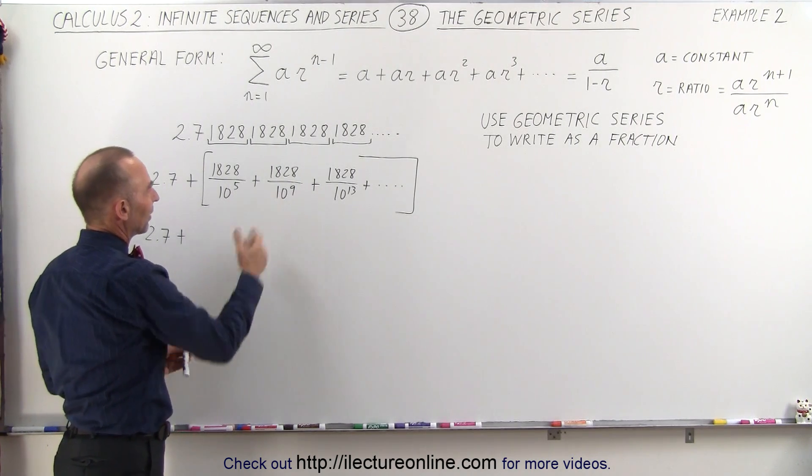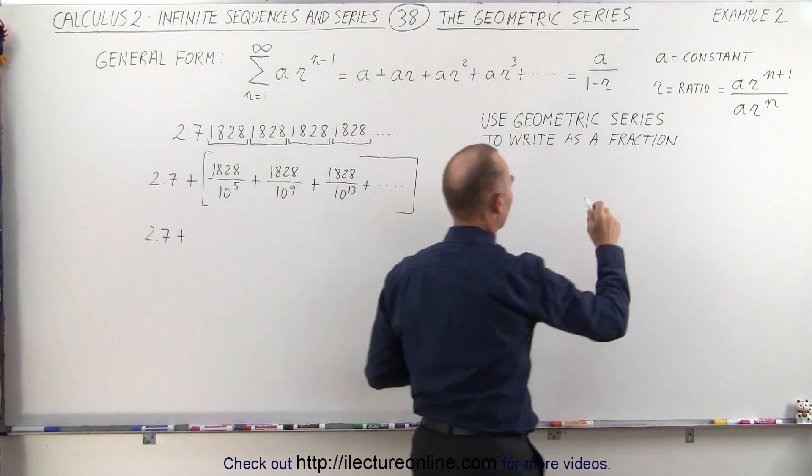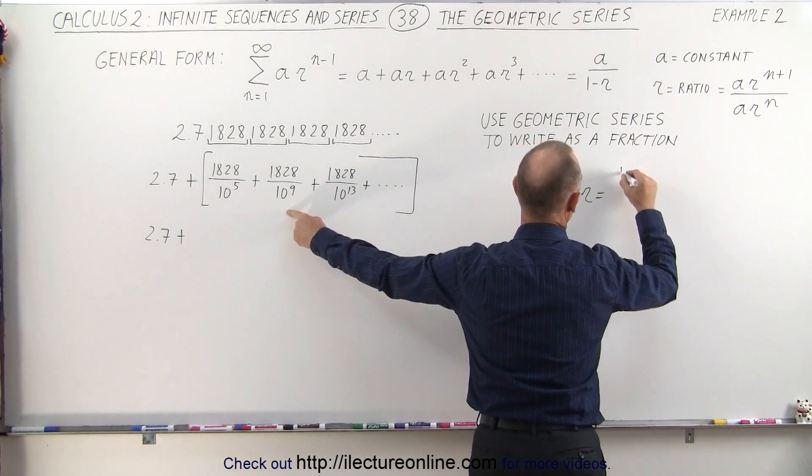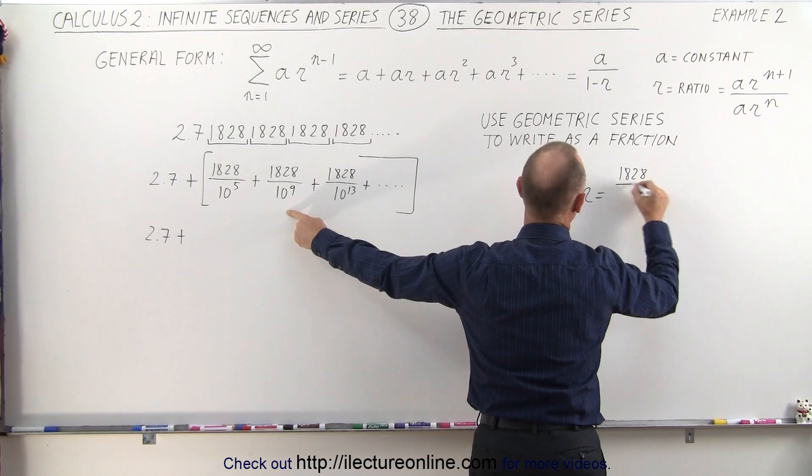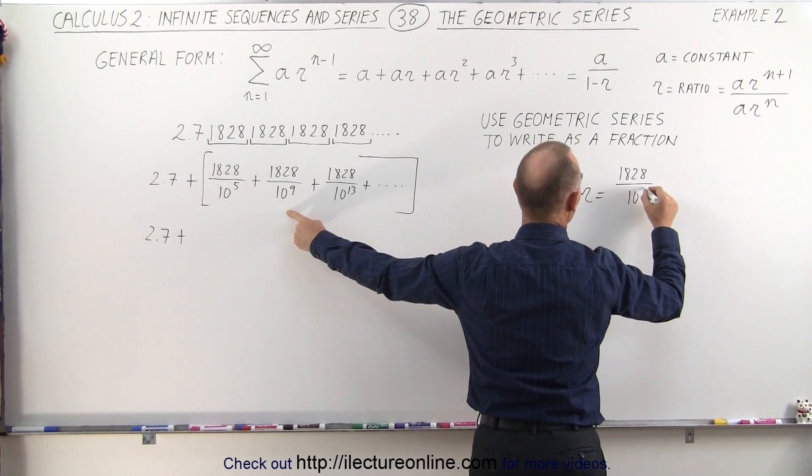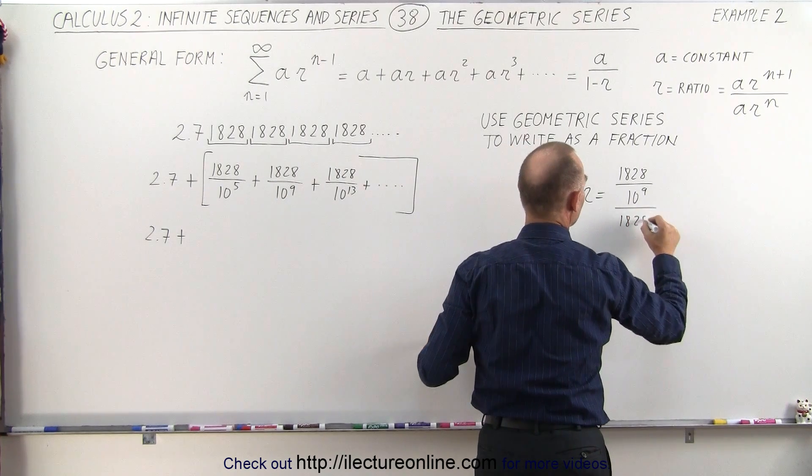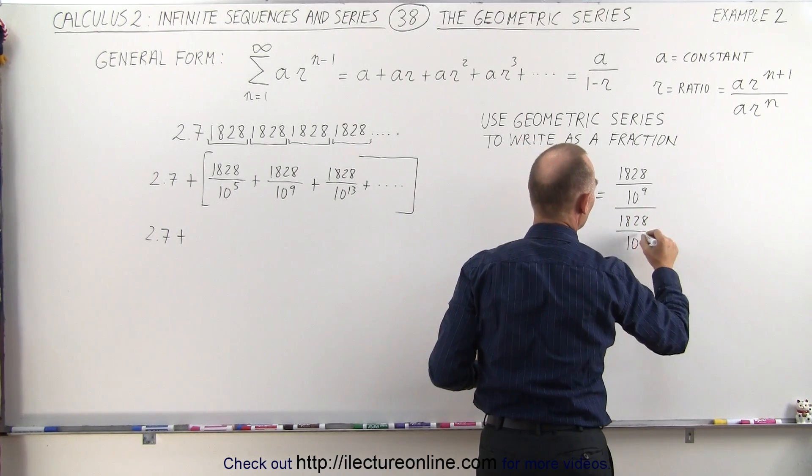So let me take these two terms right here and find the ratio and see what we get. So the ratio is equal to, taking this term, which is 1828 divided by 10 to the 9th, and we're going to divide that by the previous term, 1828 divided by 10 to the 5th.